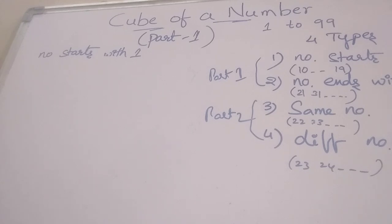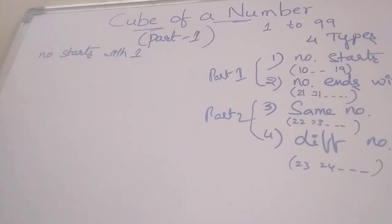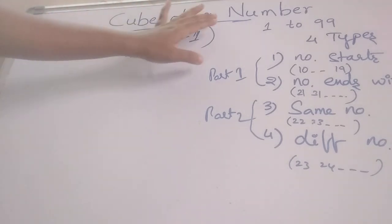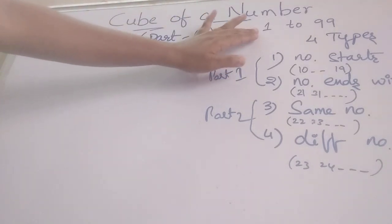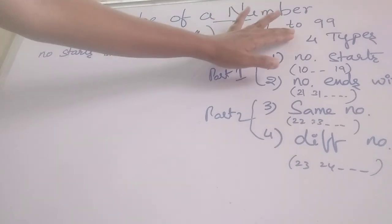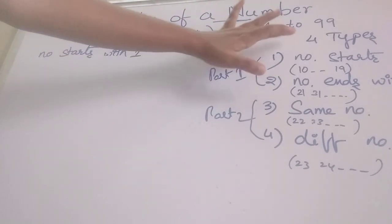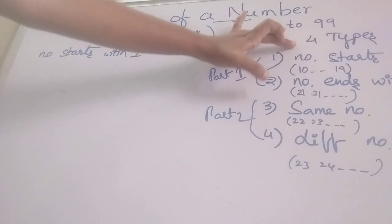Hello everyone, welcome back to session 9. In this video we are going to learn a trick for finding the cube of a number. Those numbers are from 1 to 99. In this case we have 4 types of problems.